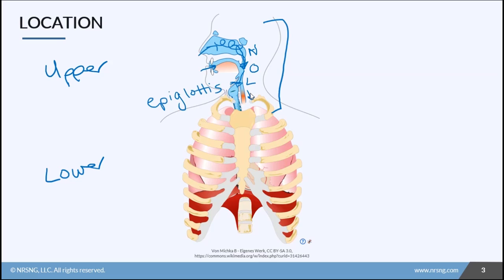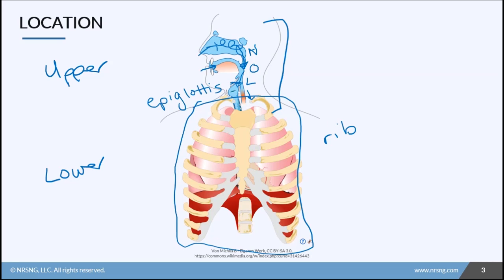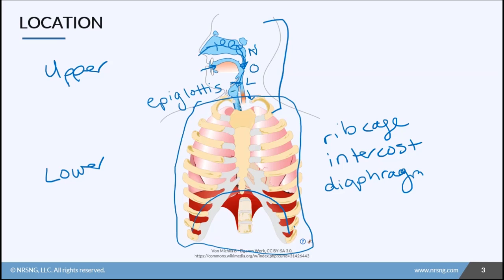The whole thoracic cavity is involved in respiration and respiratory function. The walls of the thoracic cavity are made up of the rib cage, the intercostal muscles, and the diaphragm. The diaphragm is a dome-shaped muscle at the base of the ribs and the lungs, making up the floor of the thoracic cavity. It is a skeletal muscle, which means theoretically it's voluntary, but it takes innervation from a nerve called the phrenic nerve.